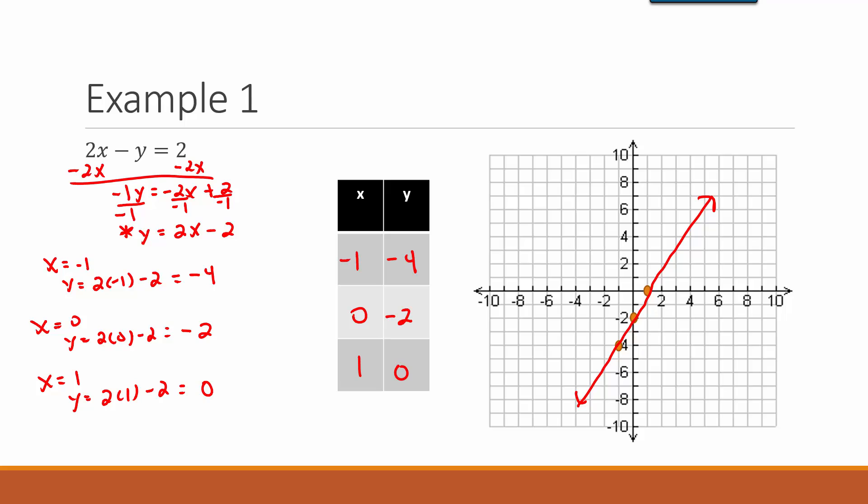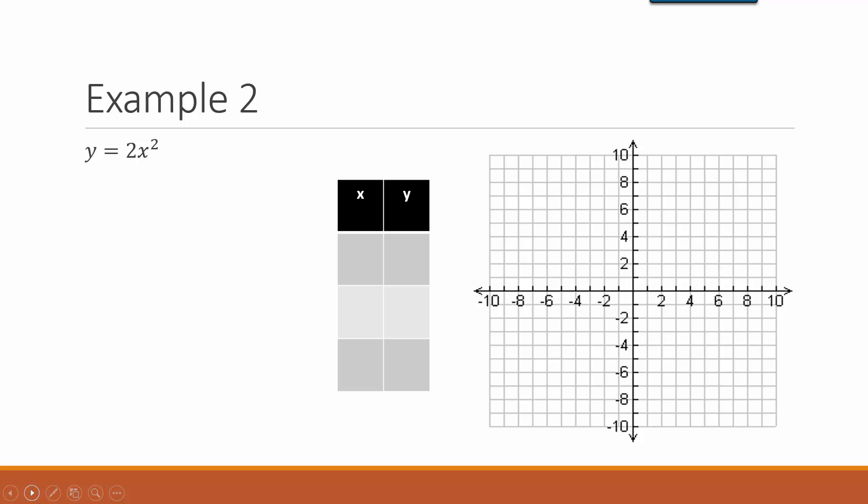Let's take a look at another example. In this one we have y equals 2x squared. If you remember back to those parent graphs, x squared produces a U-shaped figure — it's a quadratic equation. This equation is already solved for y, so I just need to pick three values for x. Those can be any three values; I'm going to go with negative 1, 0, and 1.